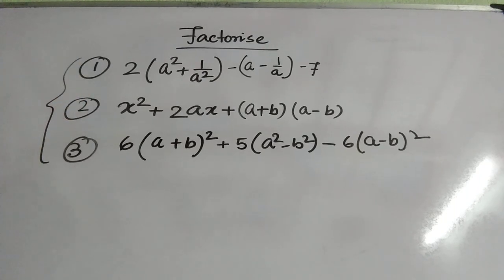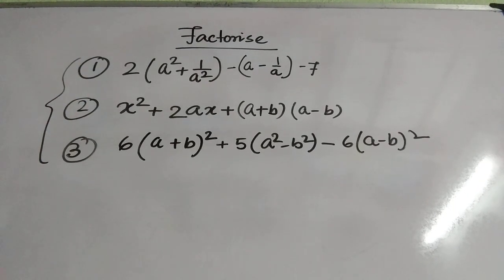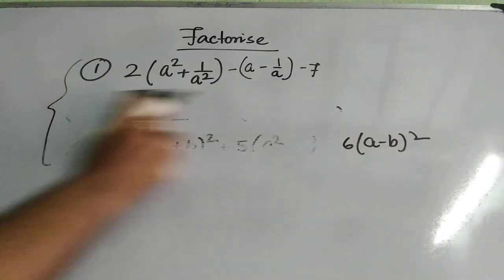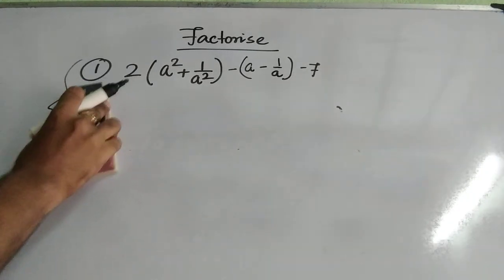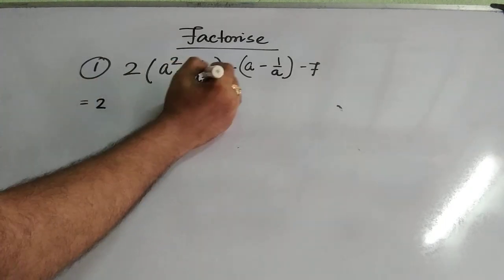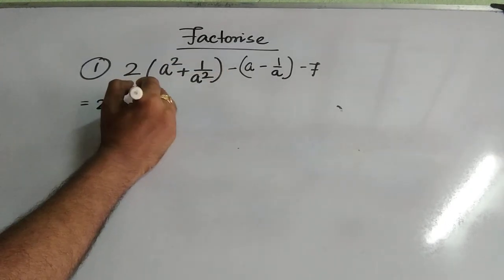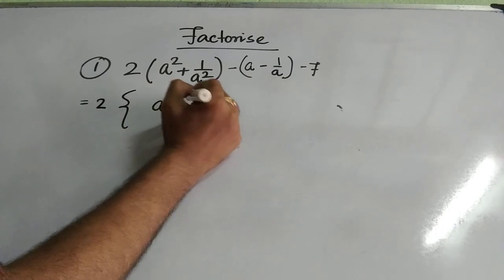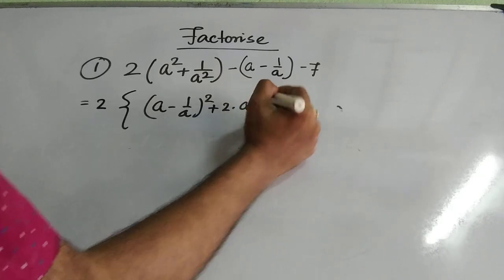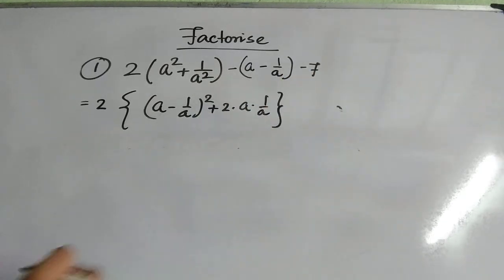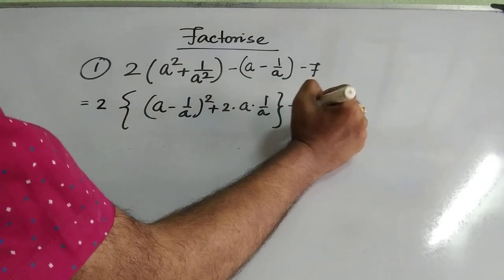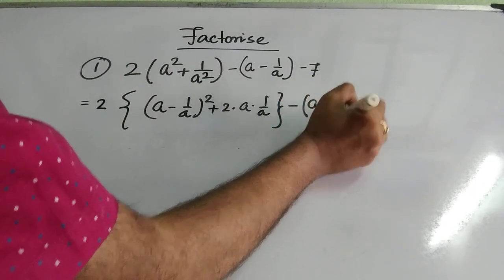The first expression is 2·(a² + 1/a²) - (a - 1/a) - 7. I am rewriting this by noting that a² + b² can be written as (a - b)² + 2ab. So the expression becomes 2·[(a - 1/a)² + 2·a·(1/a)] - (a - 1/a) - 7.